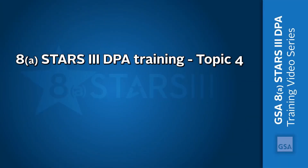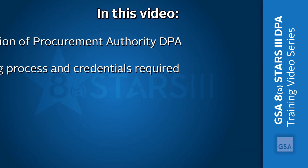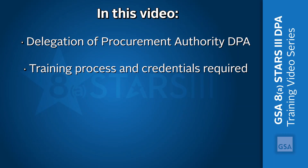Welcome to the 8STARS III DPA Training Video Series. This is the final of four videos to help you understand GSA's 8STARS III Government-Wide Acquisition Contract, or GWAC. We've already covered the basics of the 8STARS III GWAC. This video explains Delegation of Procurement Authority. Federal contracting officers must receive a Delegation of Procurement Authority, or DPA, before issuing task orders on the GSA 8STARS III GWAC. Contract familiarization training, such as this video, covers the training process and credentials needed to acquire a DPA.